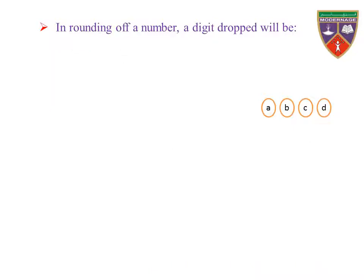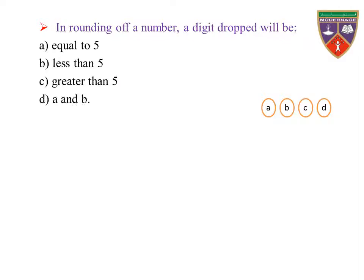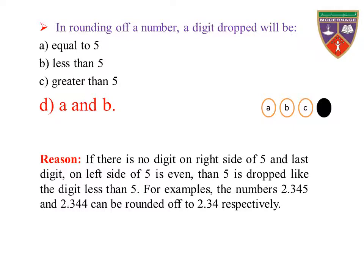In rounding of a number, a digit will be dropped if — option A: equal to 5, B: less than 5, C: greater than 5, D: A and B. The key is A and B, therefore the correct option is D. Reason: if there is no digit on the right side of 5 and the last digit on the left side of 5 is even, then 5 is dropped like a digit less than 5. For example, the numbers 2.345 and 2.344 can both be rounded off to 2.34 respectively.